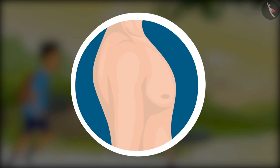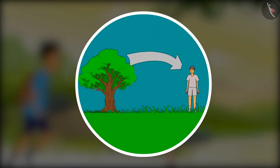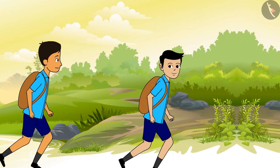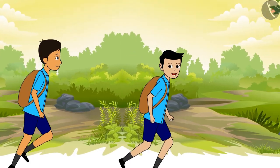Pay attention to your chest — it goes up and down at regular intervals. This is the process of respiration. By now you would know that we breathe in oxygen and release carbon dioxide. But what is the process of respiration? Come, let us learn this with Ram and Shyam, the characters of this video.